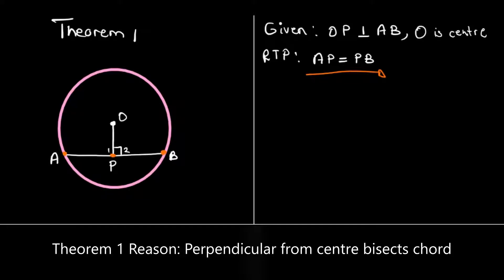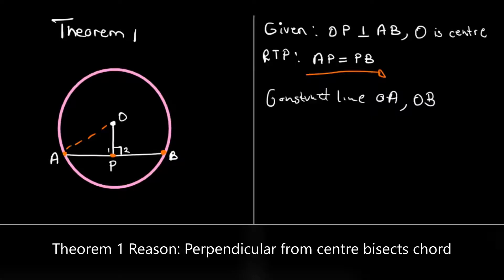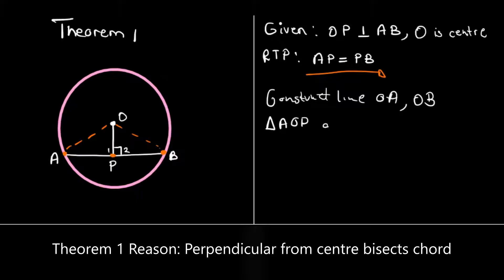So we are required to prove that. The first thing we're going to do is construct line OA, meaning that we're going to construct line OA there, and we're also going to construct line OB. By constructing these lines, we have formed triangle AOP and triangle OBP — this is the first triangle and this is the second triangle.